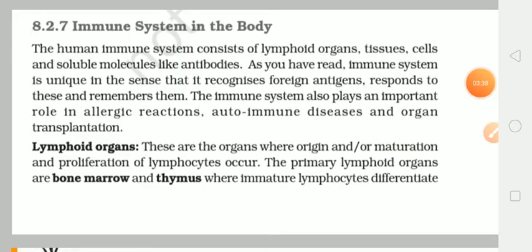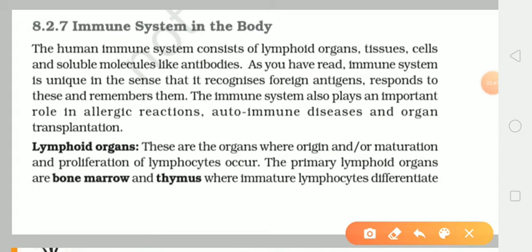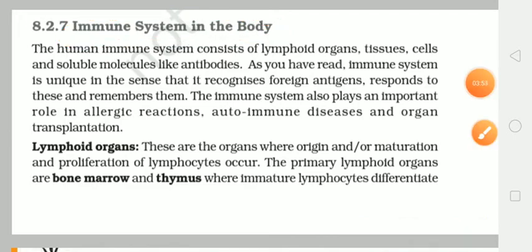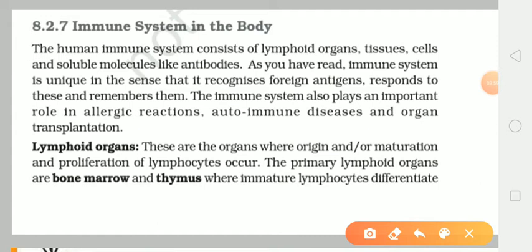Ab hum aage agle topic ke baare mein padhenge, aur voh hai immune system of our body. The human immune system consists of lymphoid organs, tissues, cells, and soluble molecules like antibodies.